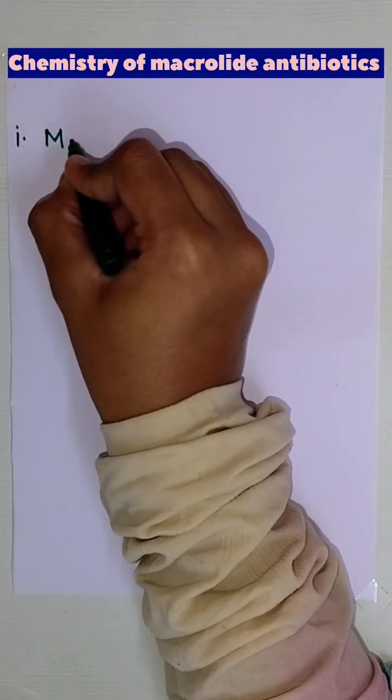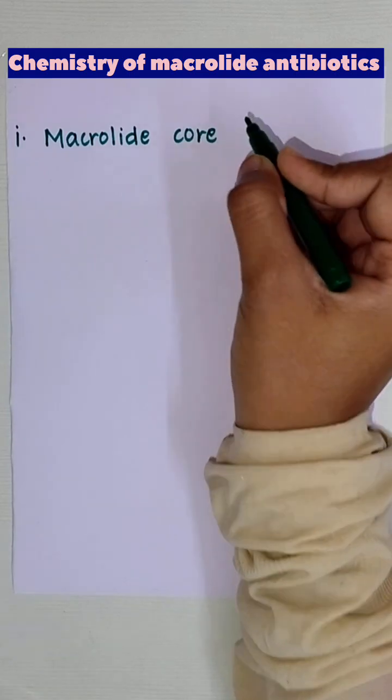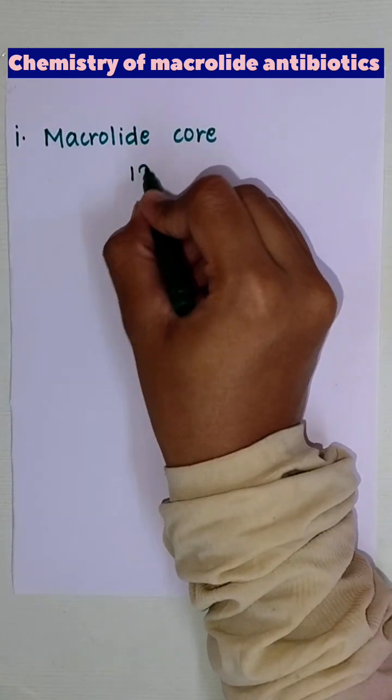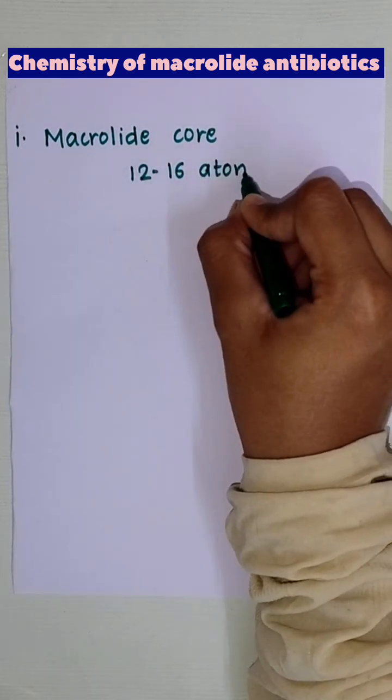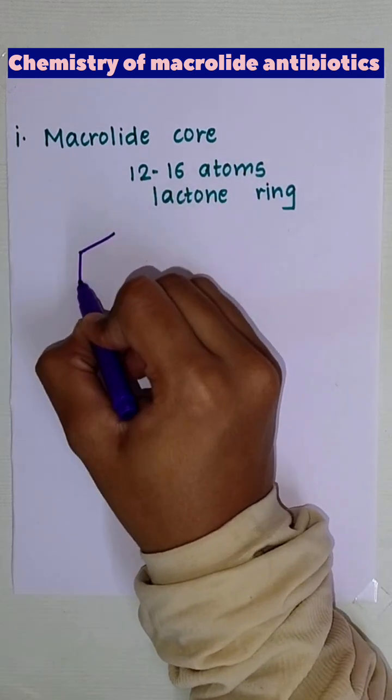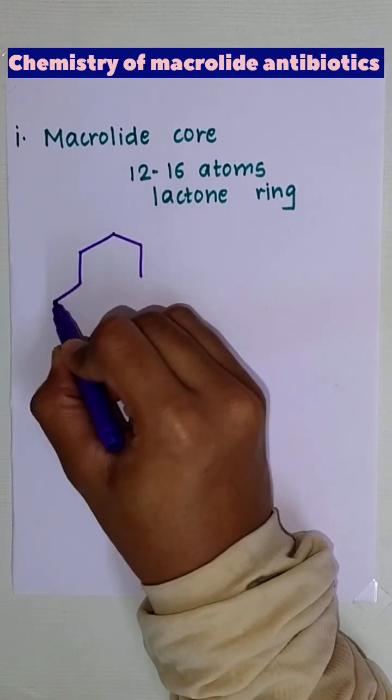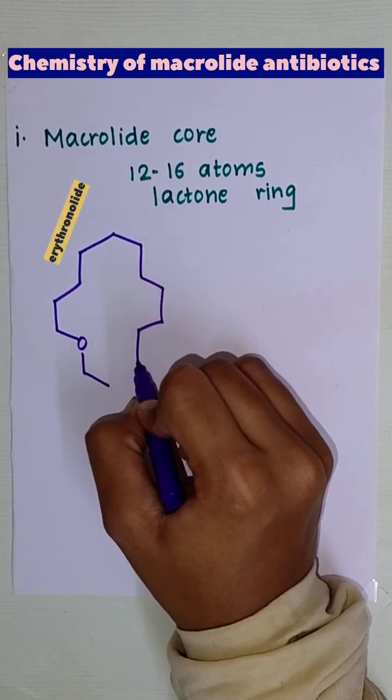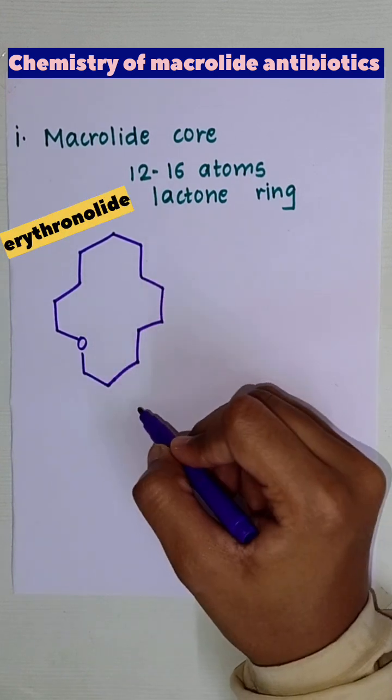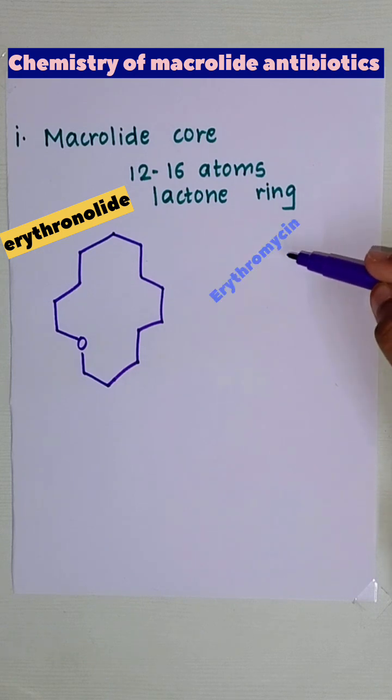First one is the macrolide core. It is a 12 to 16 atoms containing lactone ring. A 14-membered lactone ring, which is the most common, called as the erythronolide ring, is present in drugs erythromycin, clarithromycin and fluorithromycin.